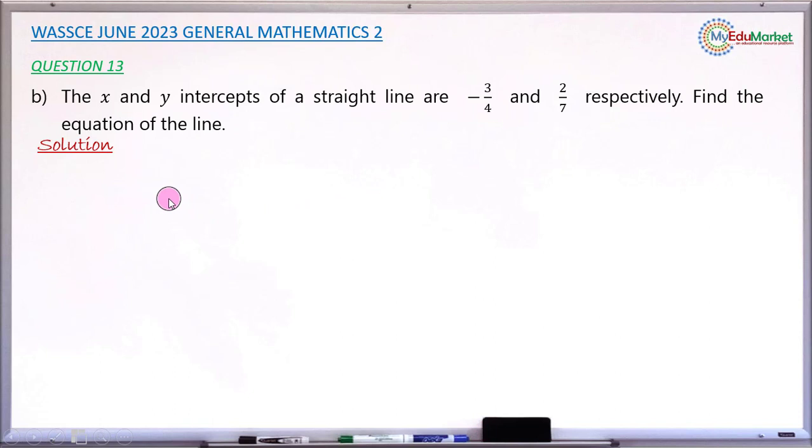So the formula that we are going to use to find the equation of the line if intercepts are given is x over a plus y over b equals 1, where a is the x intercept, in this case minus 3 over 4, and b is the y intercept, in this case 2 over 7.